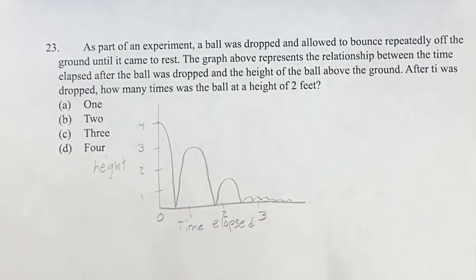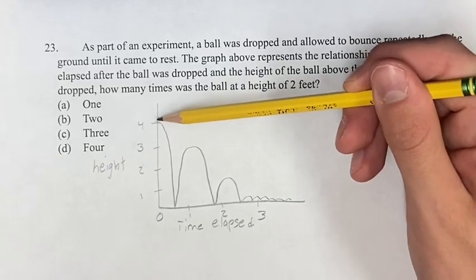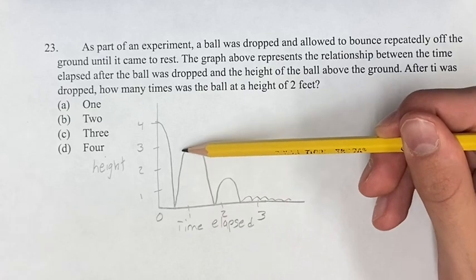We have this graph which represents the relationship between the time and the height of the ball. So you can see it was starting at four feet and then it was dropped, it goes all the way down to the floor, and then it bounces.